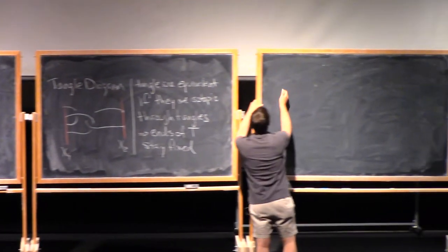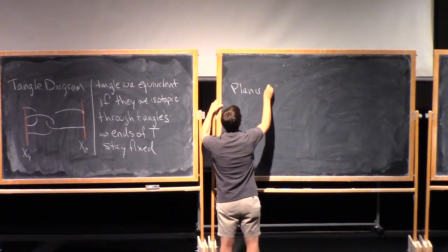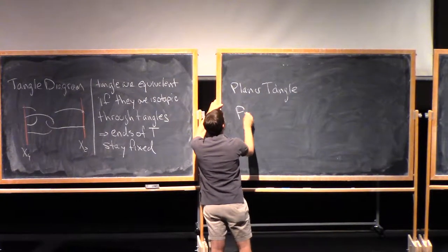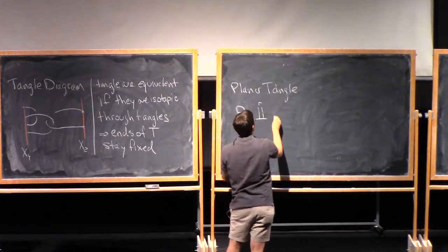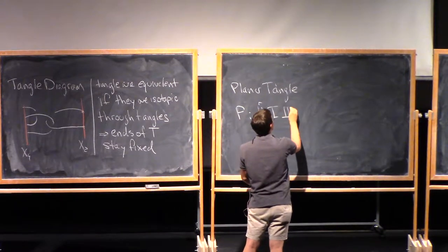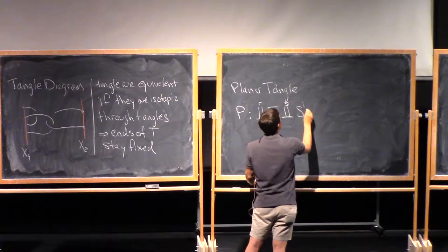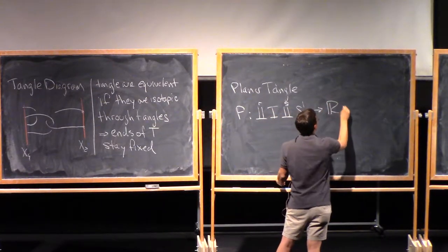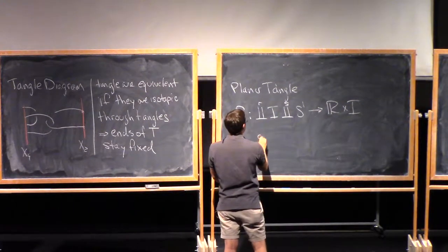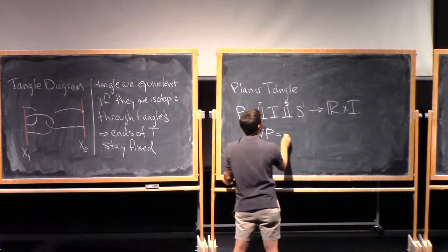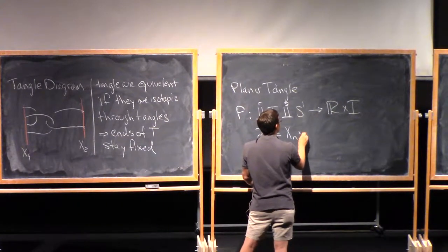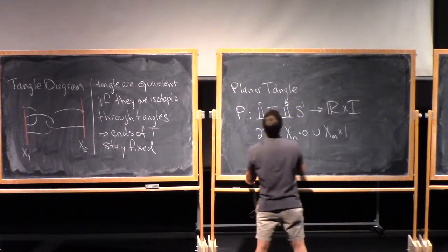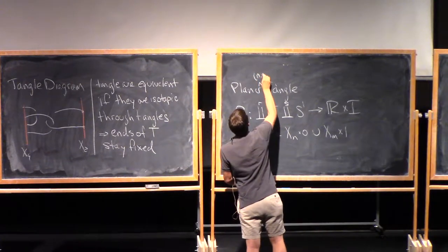There's a similar notion: planar tangles. That's a map — I'll call it p — again from some number of arcs and some number of circles, but now just into R times I, and the boundary of p is x_n times 0 union x_m times 1. So this is a planar n,m tangle.